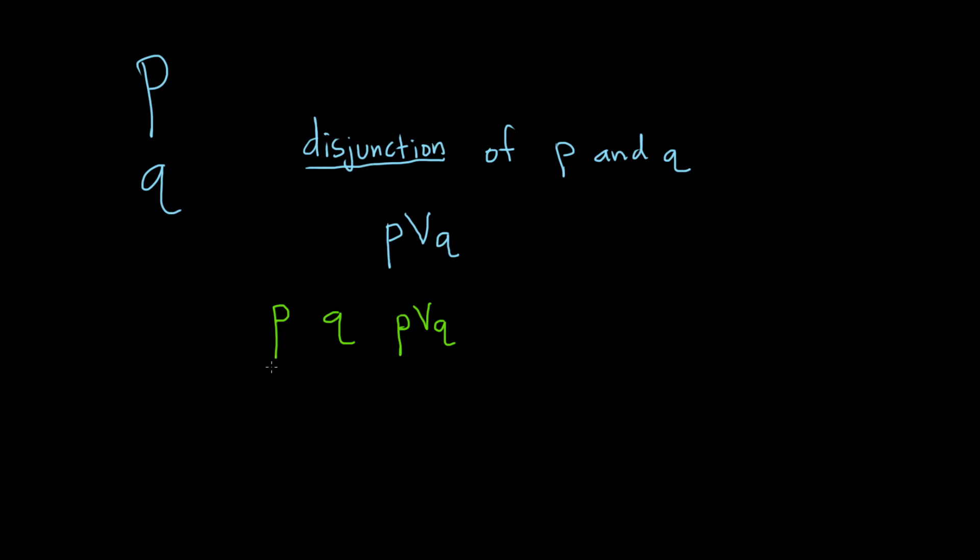Well, a simple case would be when they're both true. So p is true and q is true. In this case, at least one of them is true. And so that would mean that p or q is also true. So this would be true. As long as one of these is true, p or q is also a true statement.